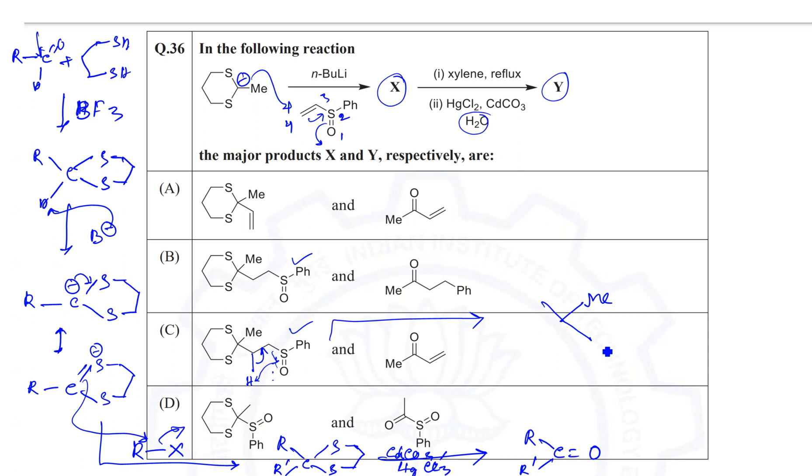After that, if it is treated with—this is a ketal, actually a cyclic thioketal—when it is treated with HgCl2 and CdCO3 with H2O, this thioketal will convert into a ketone. This bonding cleaves. This is a hydrolysis reaction and the corresponding ketone will be formed. So if you see the options, option C is correct.